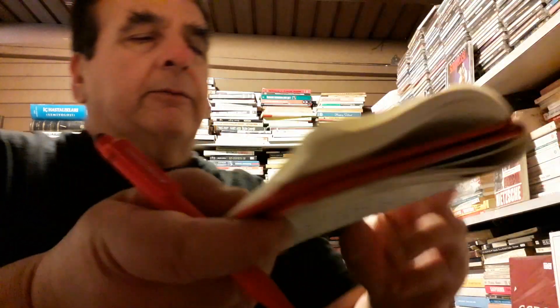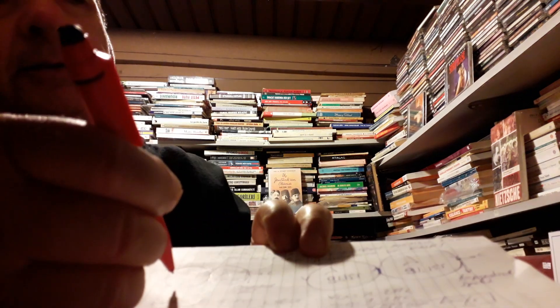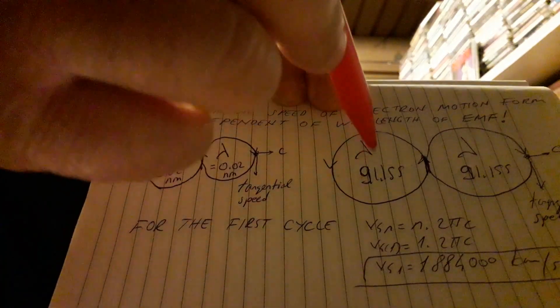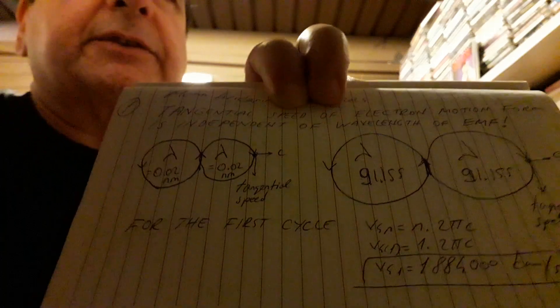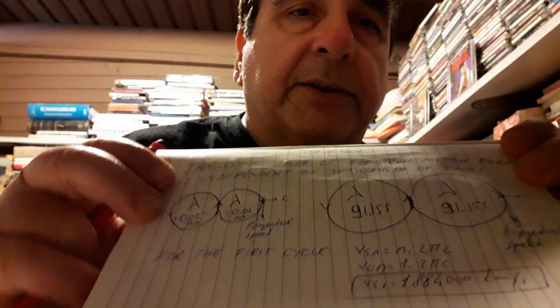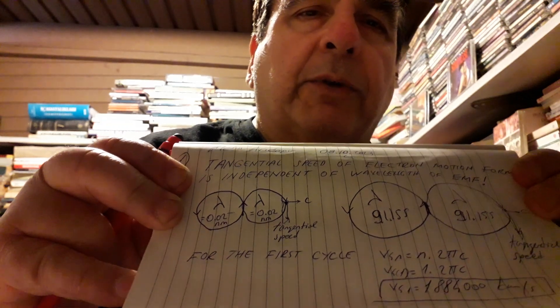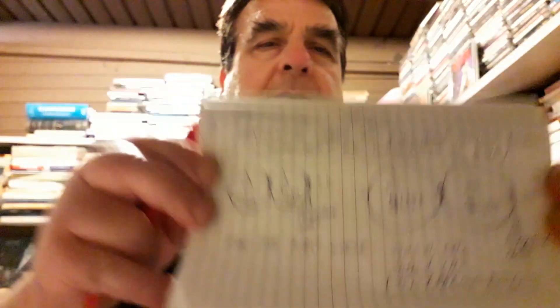The tangential speed of an electron motion form is independent of the wavelength of that electron motion form. For instance, on the left side is a 0.02 nanometer wavelength size, and on the right side is a 91.155 nanometer wavelength size — two types of electrons — but the tangential velocity speed of both are the same: 6.28 times greater than the speed of light, which is 1,884,000 kilometers per second.